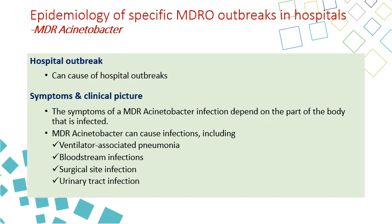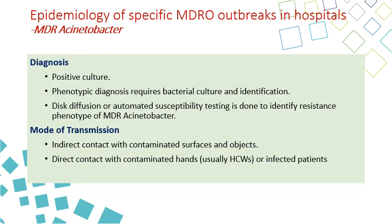Hospital outbreaks can be caused by Acinetobacter, with symptoms depending on the body site affected. Common infections include VAP, CLABSI, and SSI, diagnosed by positive culture, phenotypic diagnosis, and resistance determined by disc diffusion or automated susceptibility testing. Transmission is direct through contaminated hands of healthcare workers, and indirect through contaminated surfaces and objects.